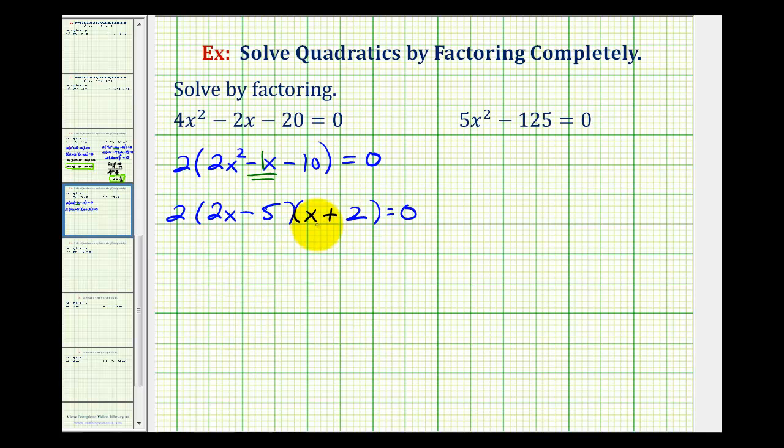Because this product is equal to 0, we can now use the zero product property to solve this equation. This 2 out here does not contain a variable, so it's not going to give us a solution. But the factor of 2x minus 5 must equal 0 or the factor of x plus 2 must equal 0.